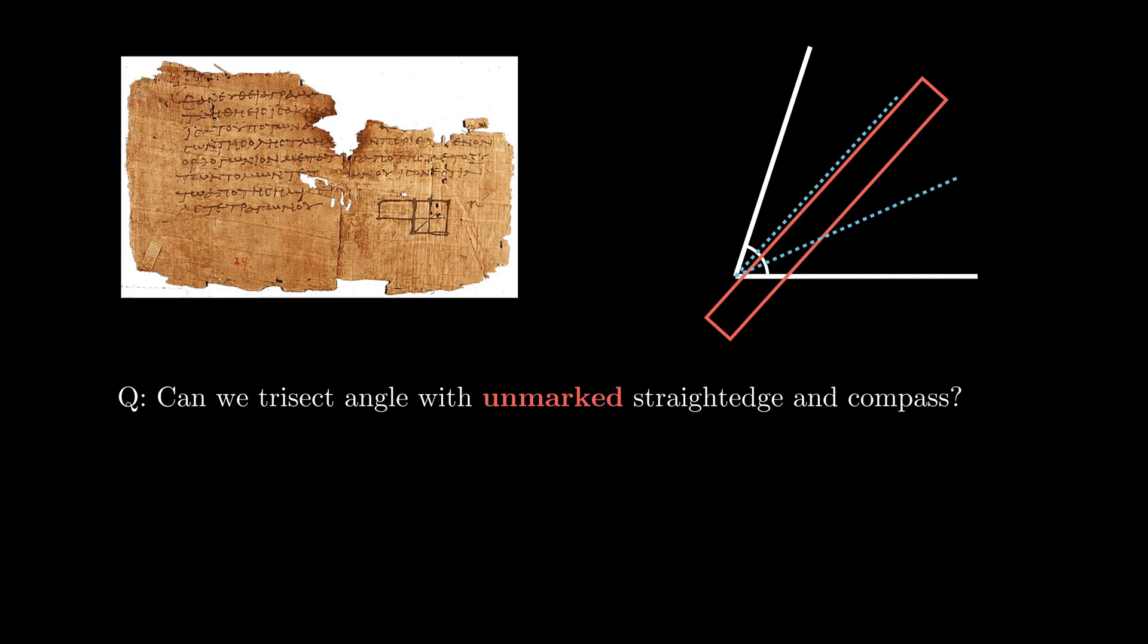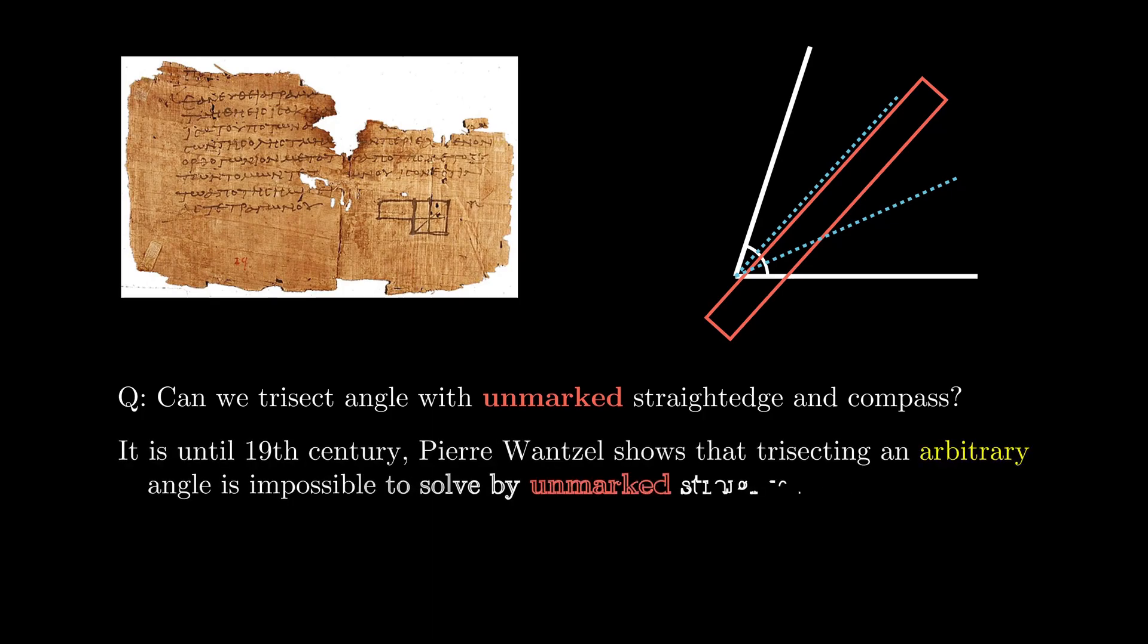This question has puzzled mathematicians for a very long time. It is until 1837 that Pierre Wantzel provides a clear answer to it. He shows that it is impossible to trisect an arbitrary angle with unmarked straight edge and compass.